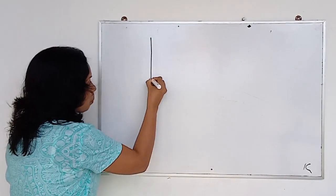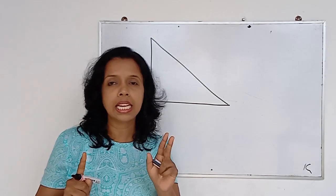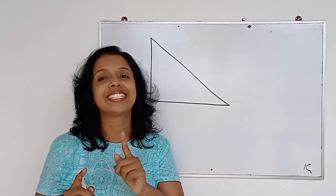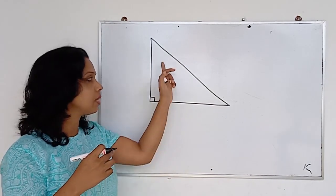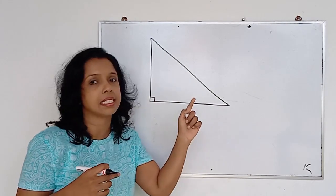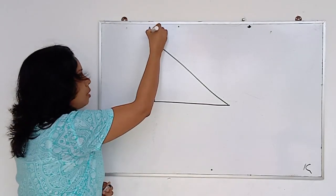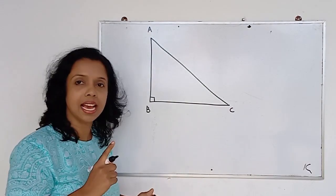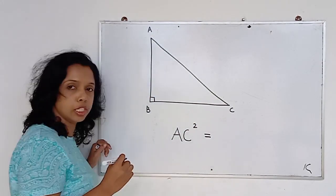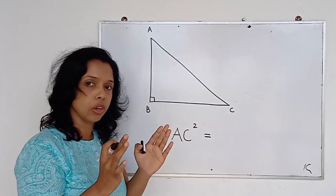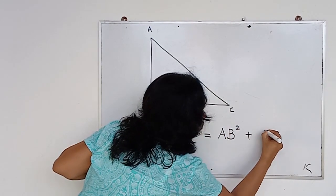In a right angle triangle, we have three sides and three interior angles. Out of these three interior angles, one angle is a right angle — that's what makes it a right angle triangle. The side which is exactly opposite to the right angle we name as the hypotenuse. According to the Pythagorean relation, in a right angle triangle ABC, the square of the hypotenuse — AC squared — should be equal to the sum of the squares of the other two sides: AB squared plus BC squared.